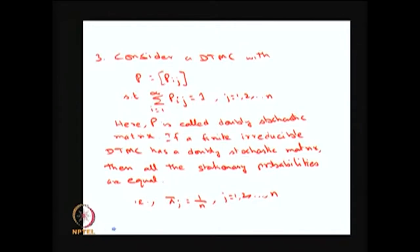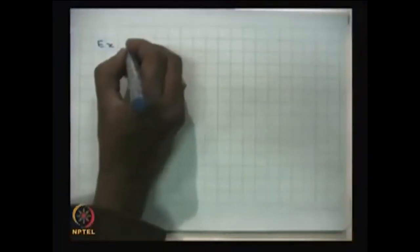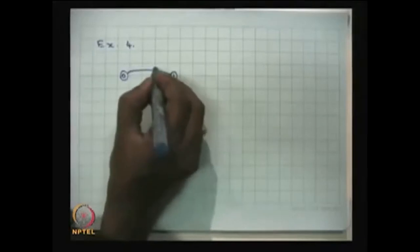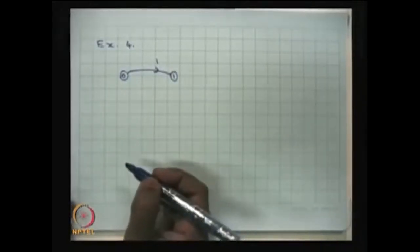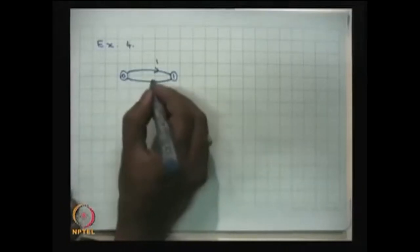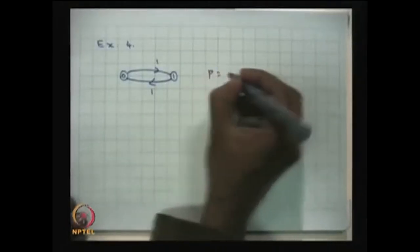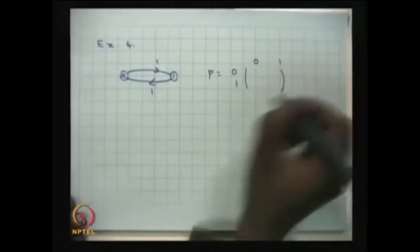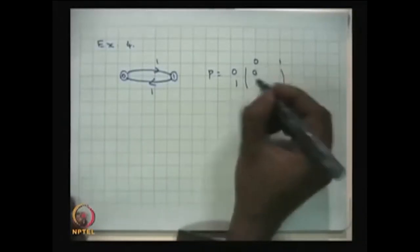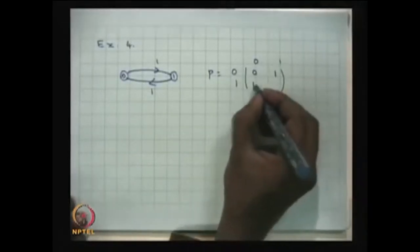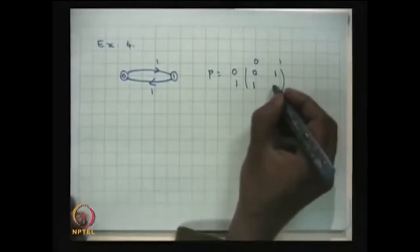The derivation can be worked out. That is Example 4. Consider a two-state model: the system goes from state 0 to state 1 in one step with probability 1, and from state 1 to state 0 with probability 1. Therefore, the one-step transition probability matrix has P(0,0) = 0, P(0,1) = 1, P(1,0) = 1, and P(1,1) = 0.